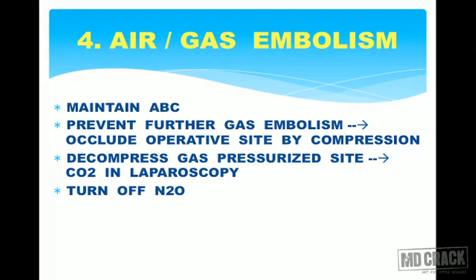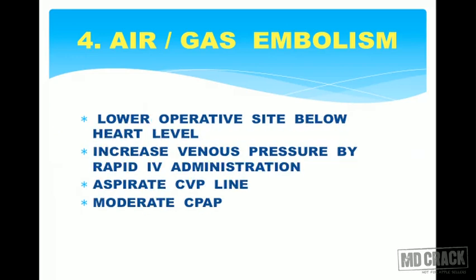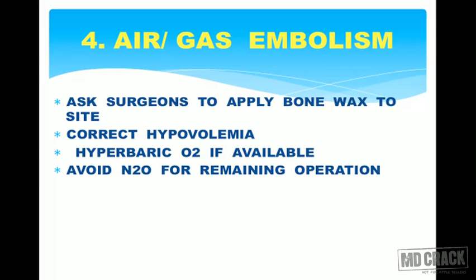To summarize treatment of air or gas embolism: maintain airway, breathing, and circulation; prevent further gas embolism by occluding the operative side; depress the gas-pressurized side (remove CO2 in laparoscopic cases); turn off nitrous oxide; lower the operative side below heart level; increase venous pressure by rapid IV administration; aspirate the CVP line — even aspirating 0.5 ml of gas causes drastic improvement. Apply moderate CPAP, apply bone wax, correct hypovolemia, use hyperbaric oxygen if available, and avoid nitrous oxide for remaining surgery.